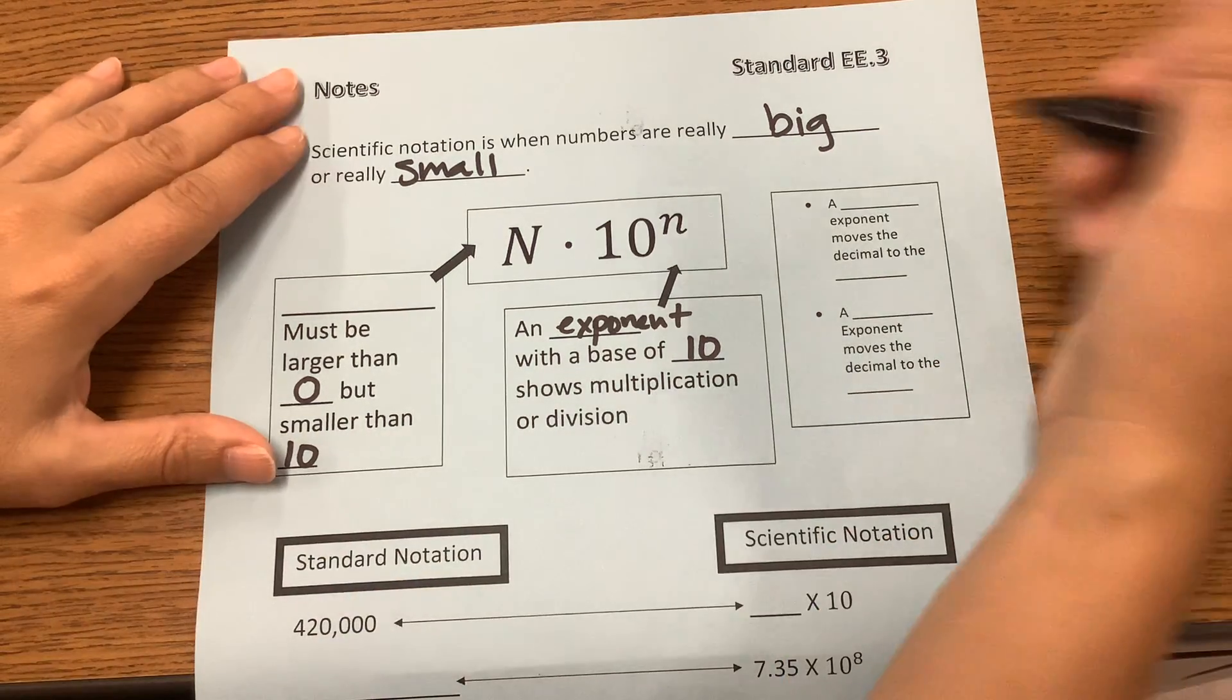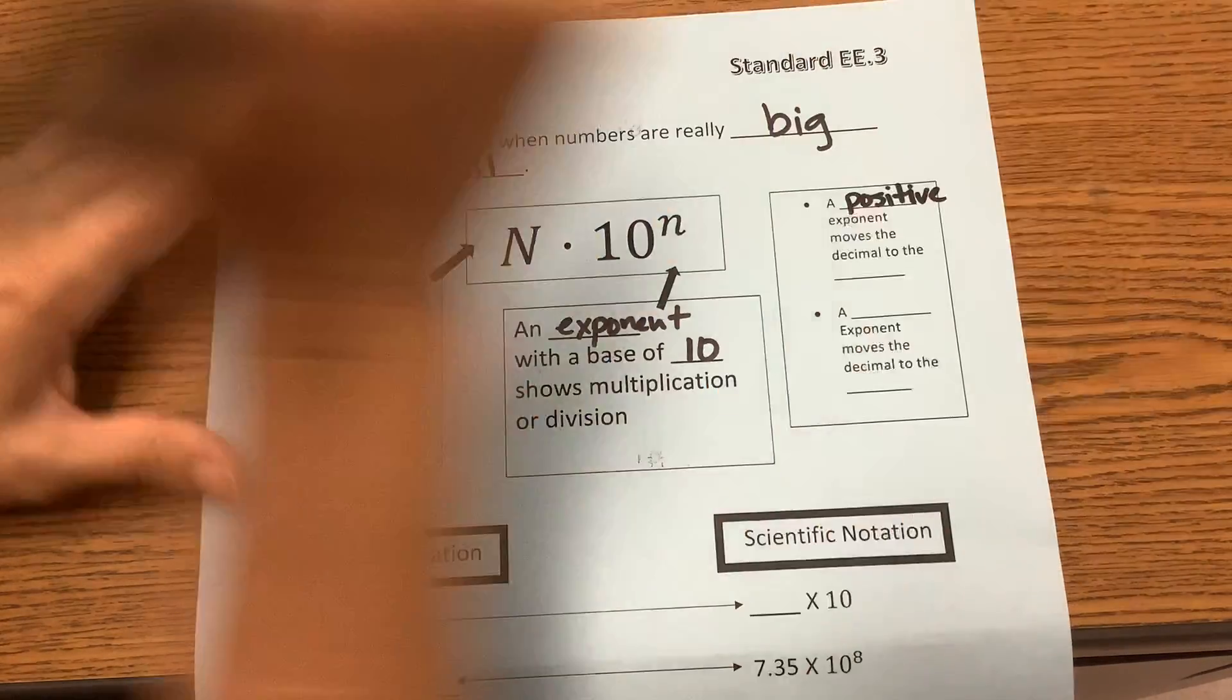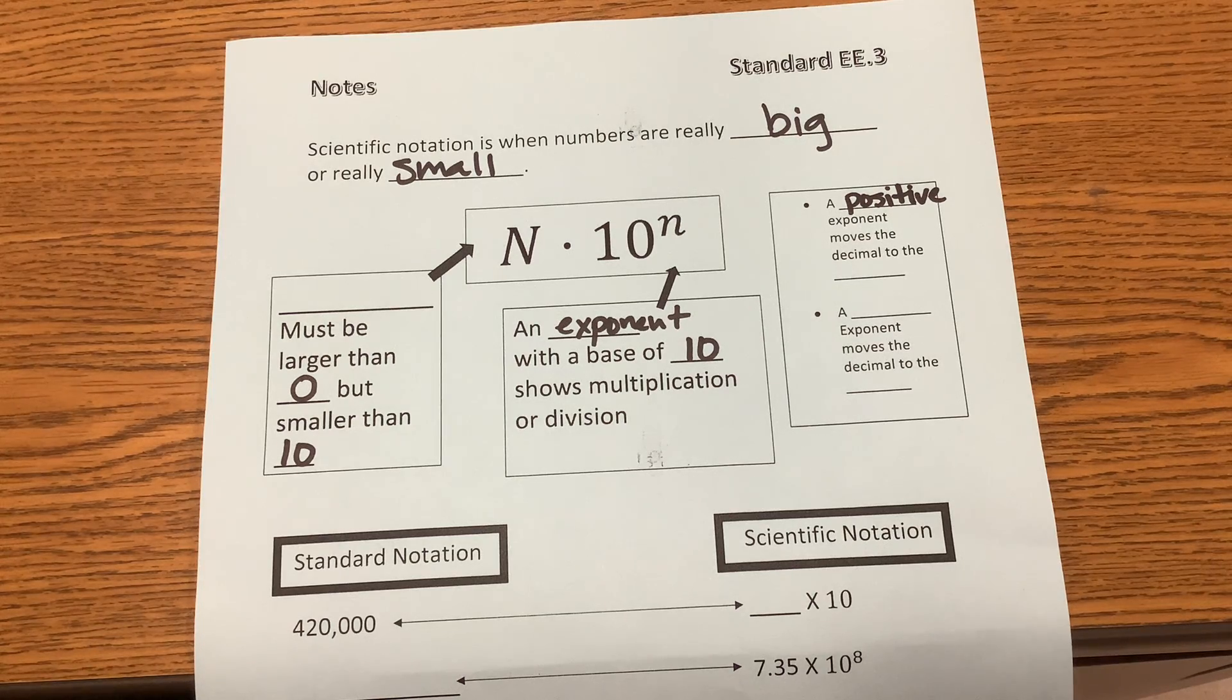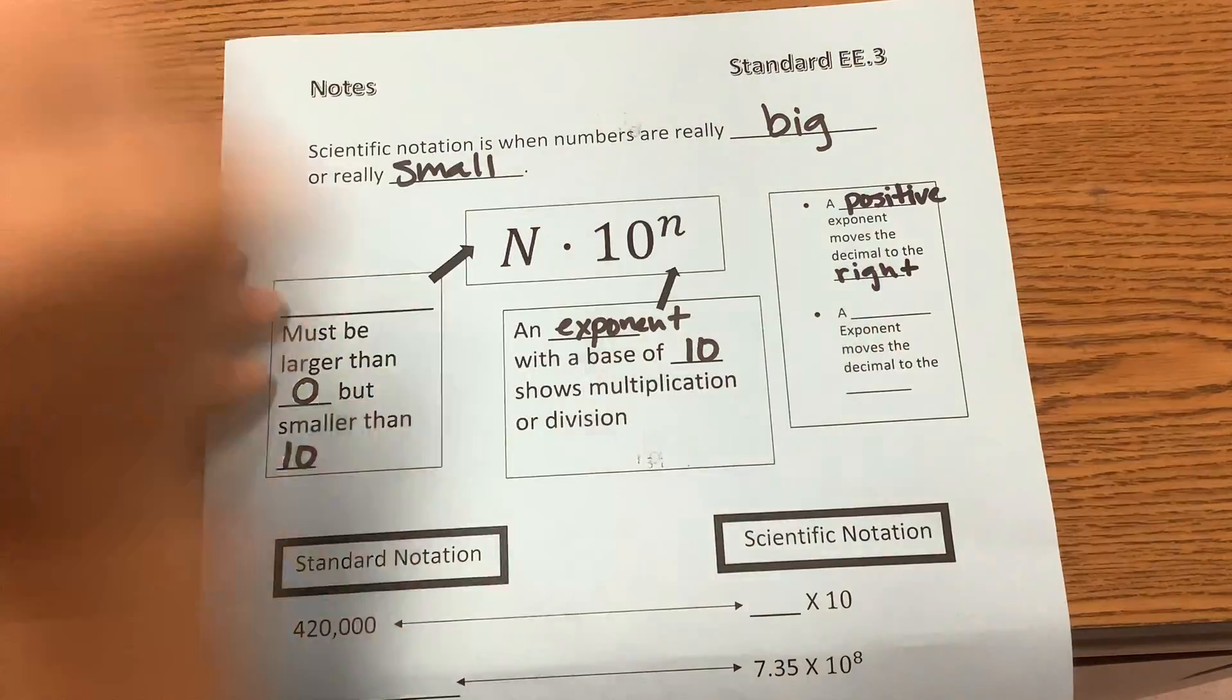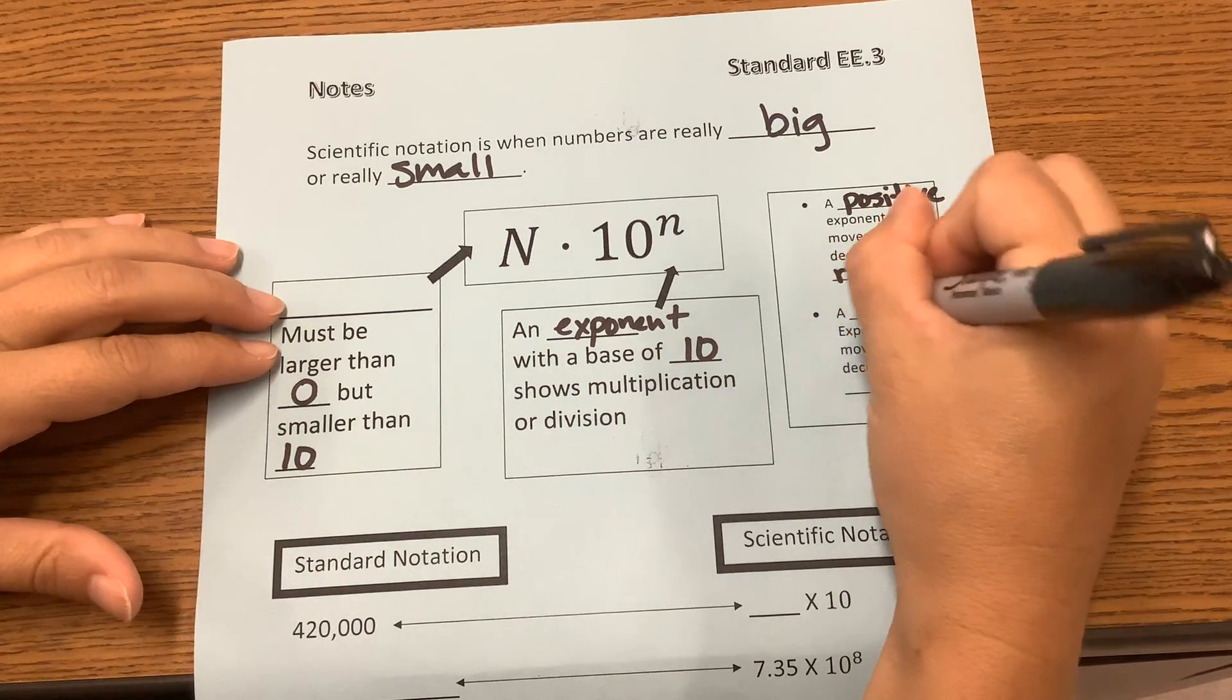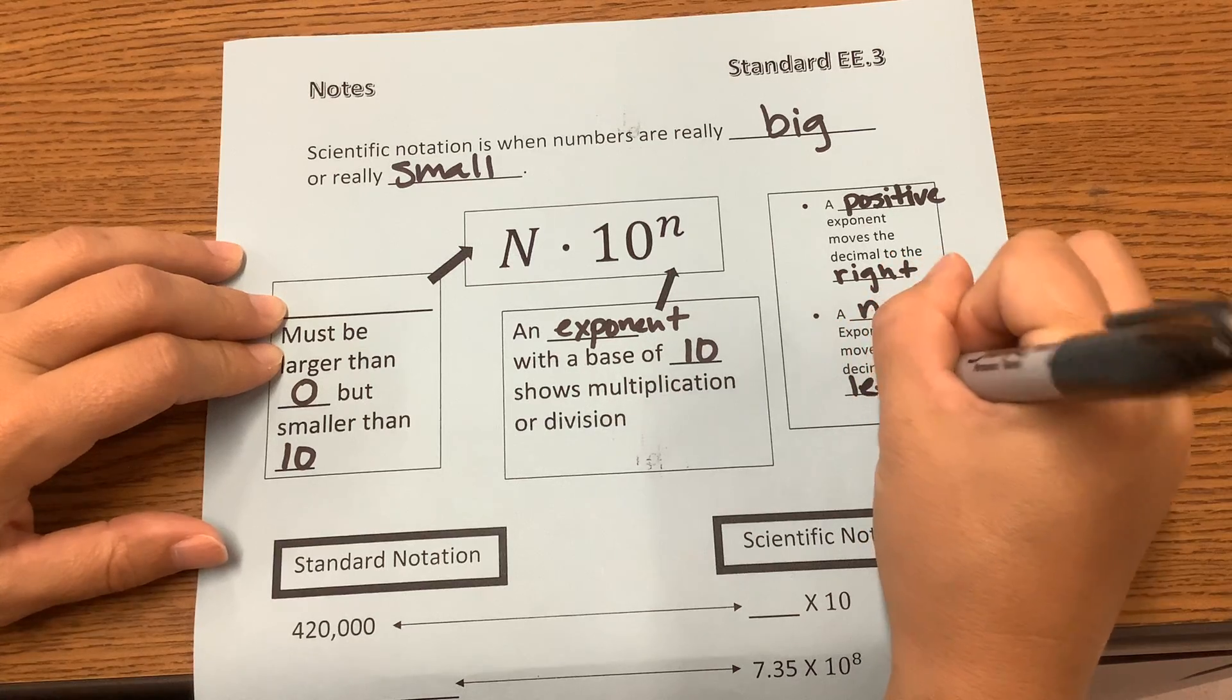A positive exponent moves the decimal to the—okay, so if it's positive, it's going to get bigger, which means it's going to move the decimal to the right. And a negative exponent is going to move it to the left because it's going to get smaller.